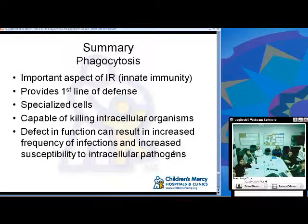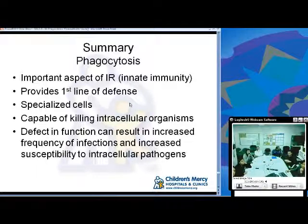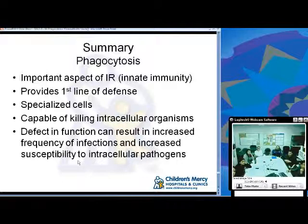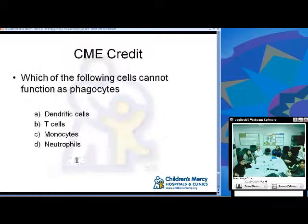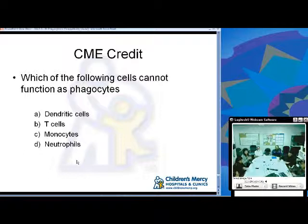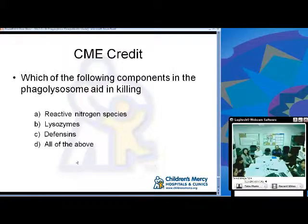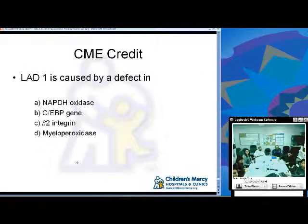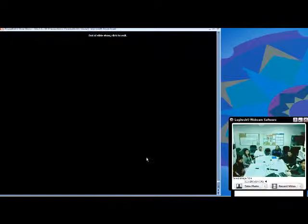In summary, phagocytosis is an important aspect of innate immunity, providing the first line of defense. It involves specialized cells capable of killing intracellular organisms. A defect in function can result in increased frequency of infections and increased susceptibility to intracellular pathogens. Let's review the CME questions: which of the fallen cells cannot function as a phagocyte? Which of the following components in the phagolysosome is involved in killing? And LAD1 is caused by a defect in what?